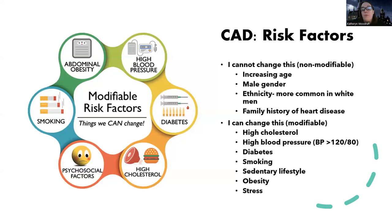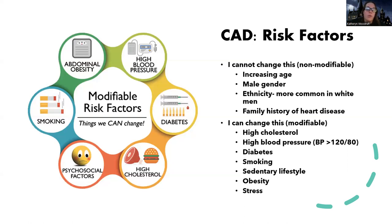High cholesterol - we can modify that with medications and diet. High blood pressure - we can make it better with medications, treating the hypertension, diet changes, and exercise. Diabetes - we can manage it well with medications, diet, and exercise, depending on the type. Smoking - you can significantly decrease your risk for coronary artery disease by quitting smoking. Even if you have a history of smoking in the past, it's one of the best things you can change, similar to PAD.